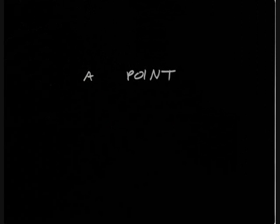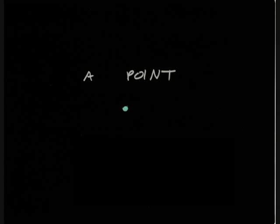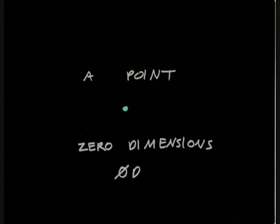A point is simply a position in space. It does not have length, width, or height. It does not take up any space at all. That is, it has zero dimensions. It also has no direction.